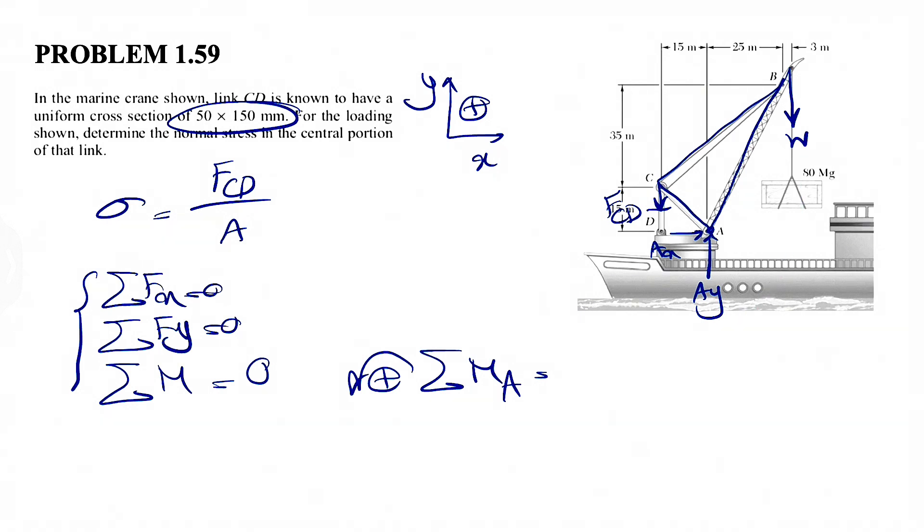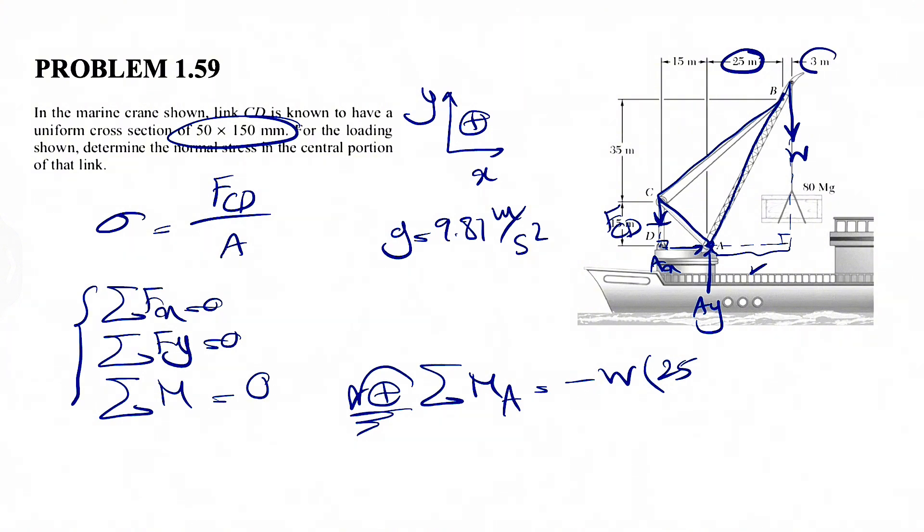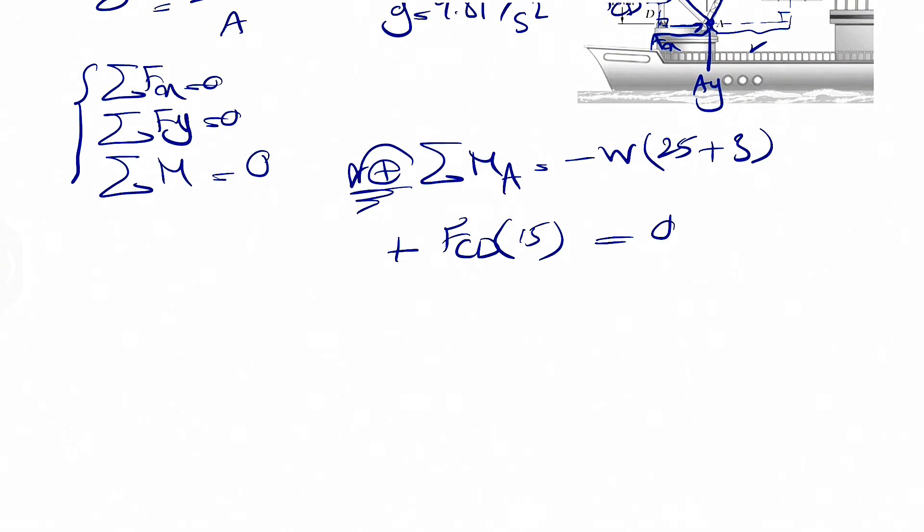So we're going to have the moment of the weight, which is clockwise, since we consider counterclockwise positive. So that will be negative. So minus W is the force. And we're looking for the distance, which would be vertical distance from A to the line of action, which is this distance, which would be what we have in here, 25 plus this little 3 meter distance. So 25 plus 3. And we're going to have the moment of the F_CD, which as we can see is going to be counterclockwise. So it will be a positive moment. So F_CD and the distance would be the vertical distance to the line of action from A to here, which is going to be 15. And this will be equal to zero because of equilibrium situation.